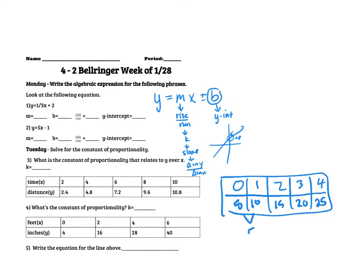The change here would be 5. The change here would be plus 1. So our change in Y over change in X would be 5 over 1.